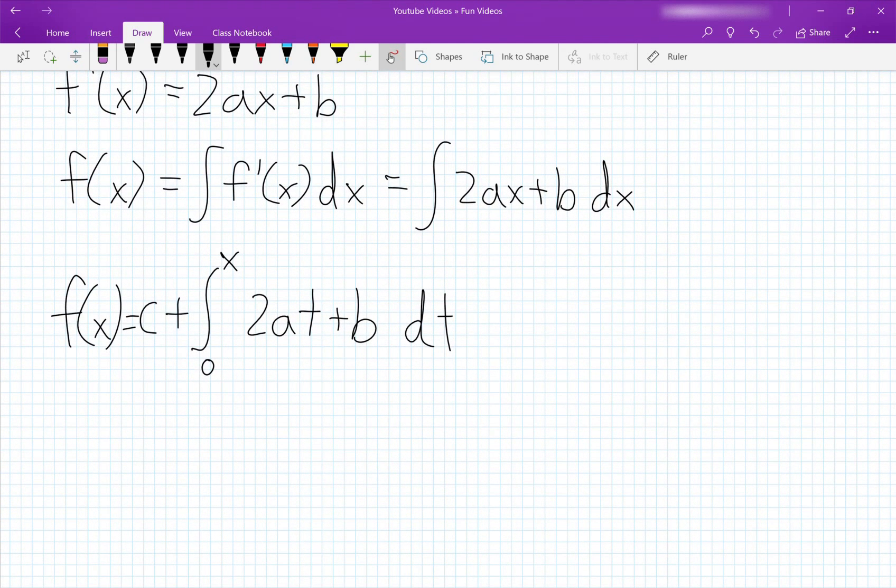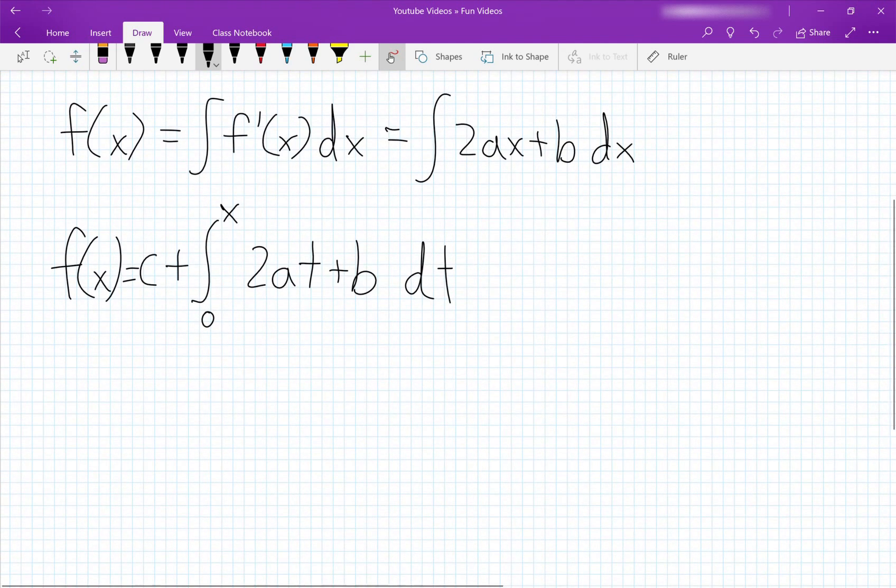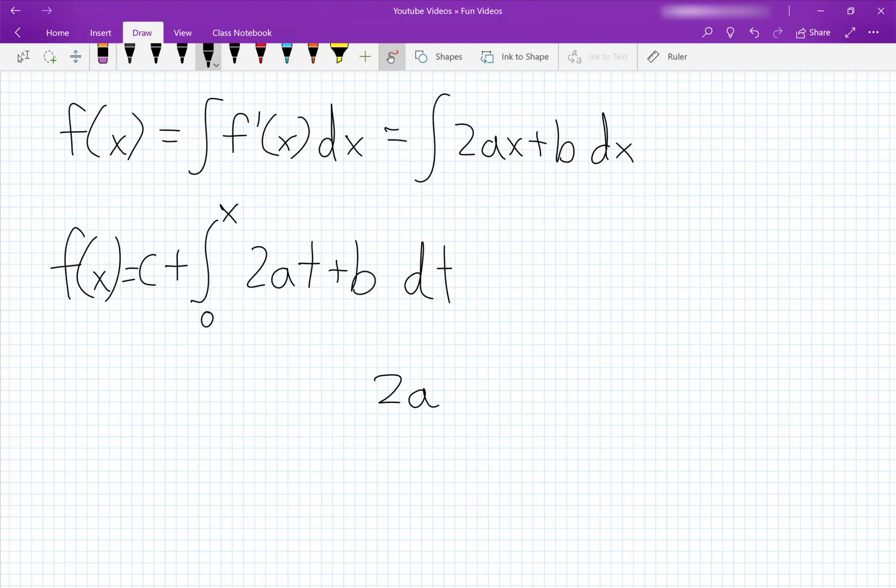But we still can't directly solve this right away because if we do try to, we get an equation that looks like this: 2at squared over 2 plus bt.